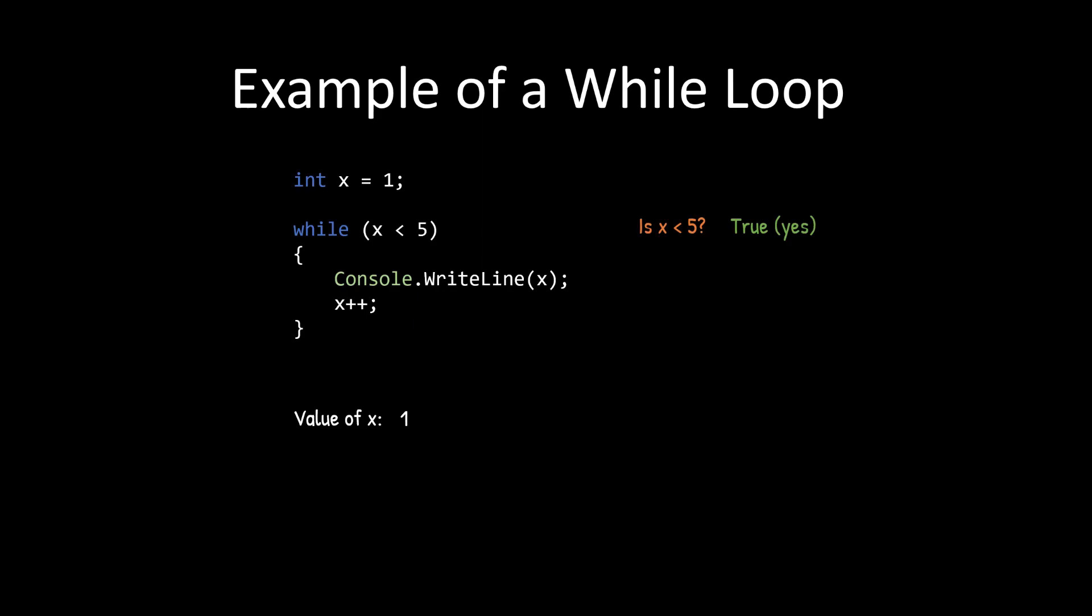Yes, that is true. So then it's going to drop into the code block and it's going to print it out to the console and then it's going to add one to the value of x and reassign it. Remember that x plus plus is the same as x equals x plus one. So x is now two and it hits the bottom of the loop and it jumps back up to the top.